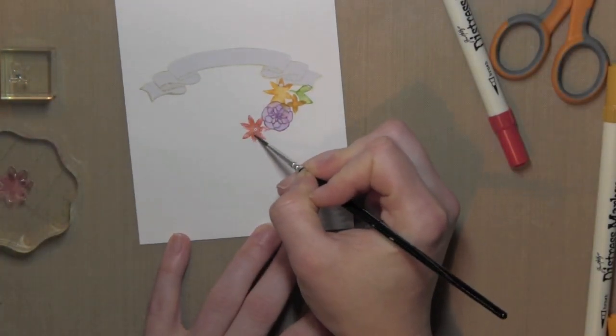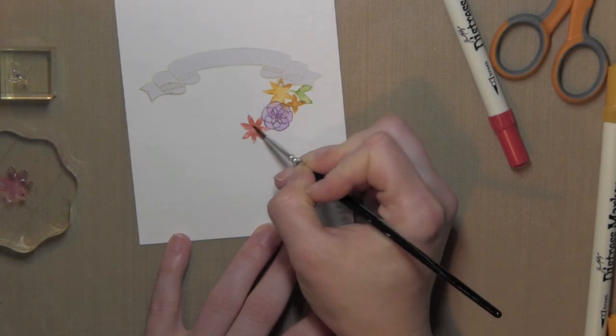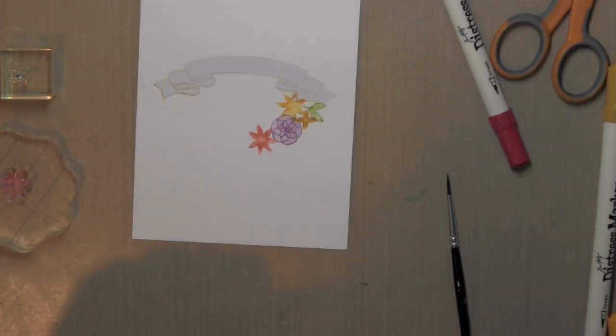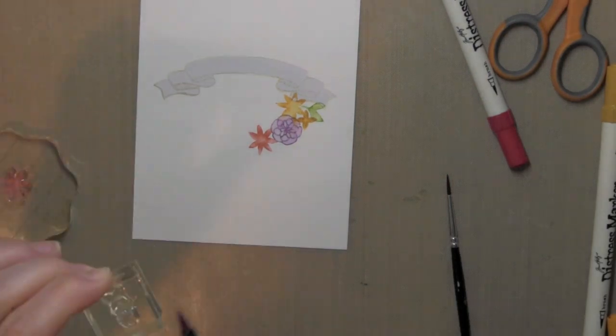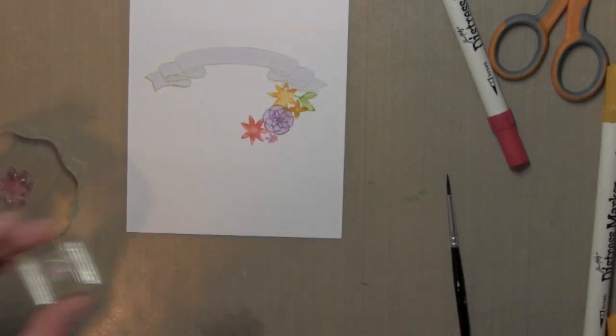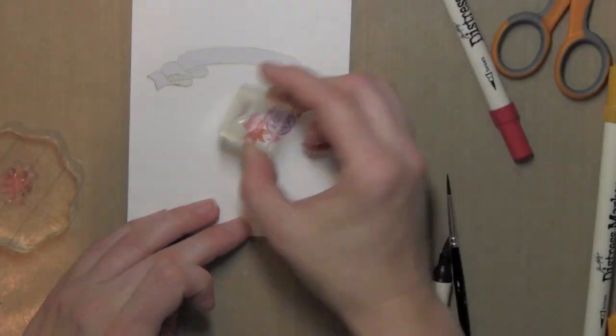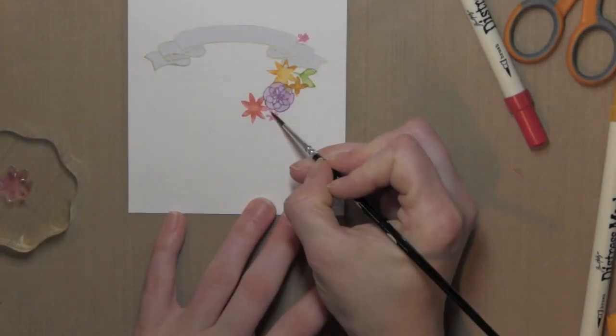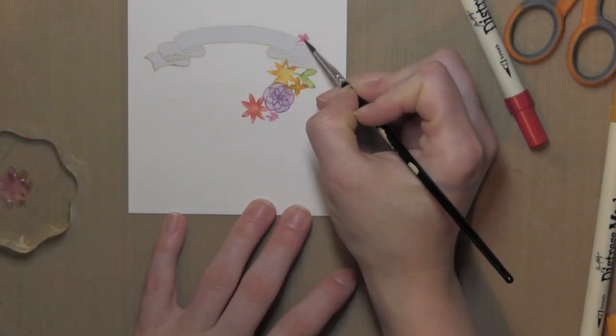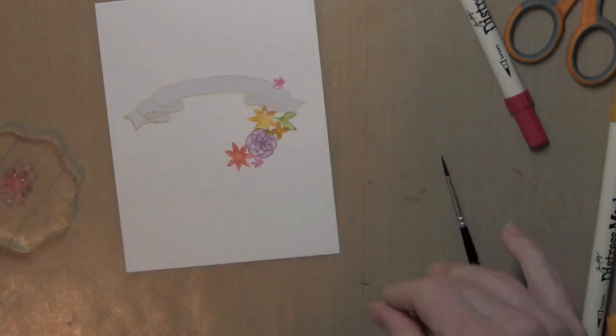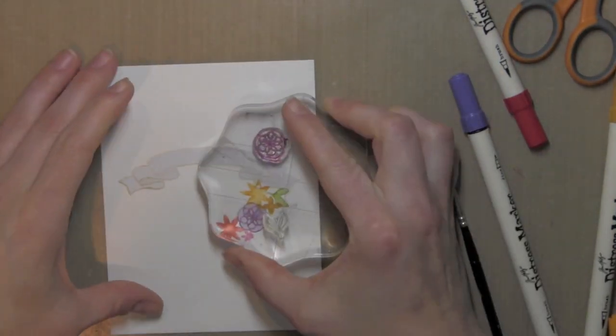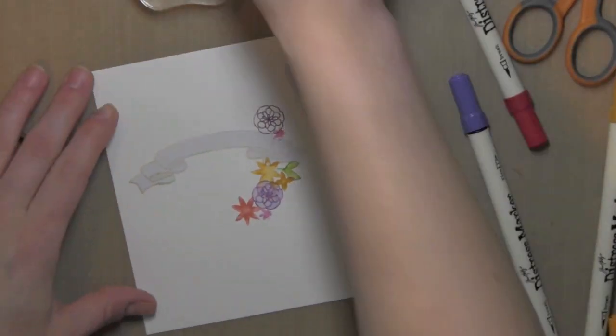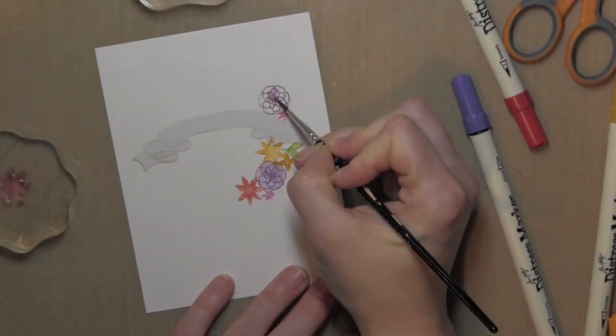You could do it either way and I would have left it this way if I had done the banner a bit darker. Now you may notice that the stamping with these Distress Markers, the inking of them and everything, it may not come with a really clean stamped impression. For this technique that is exactly what I want.